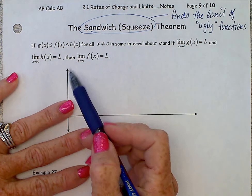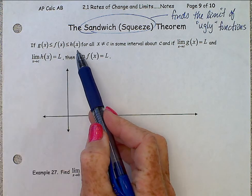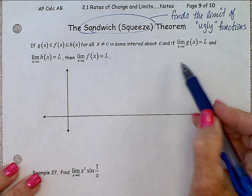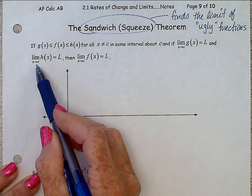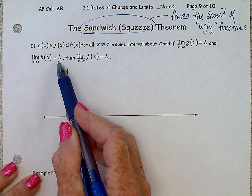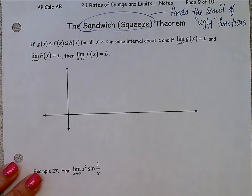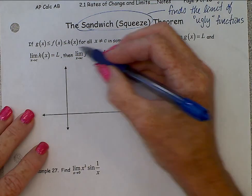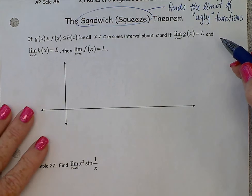So if we look at what this says, if g(x) is less than or equal to f(x) is less than or equal to h(x) for all x not equal to c in some interval about c, and if the limit as x approaches c of g(x) is equal to L and the limit as x approaches c of h(x) is equal to L, then the limit as x approaches c of f(x) is equal to L. My goodness, reading that makes your head want to explode. It's really not that difficult of a concept, but the wording and the mathematical symbols make this very difficult to sort through. So let's see if we can figure this out.